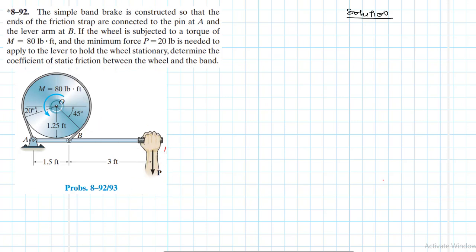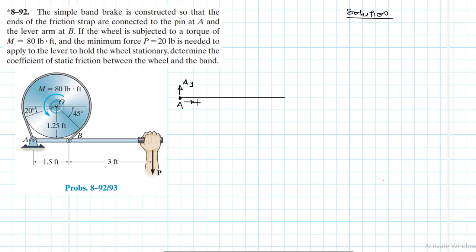First, we draw a free body diagram. We have beam AB extending to the point where P is applied, and the rotating wheel. Starting with the beam: at A we expect reaction forces Ay and Ax. We also have part of the simple band acting on the beam, which I'll call TA, and it is at an angle of 20 degrees with the vertical axis.